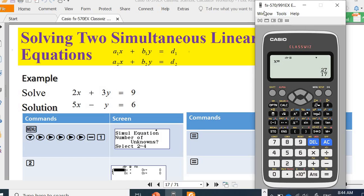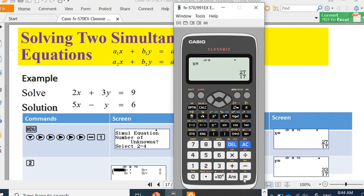You get the first value for your x. You press equal again, and this is the second value for your y.